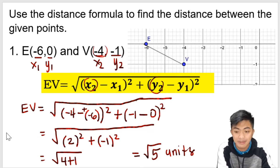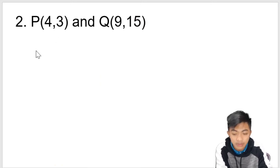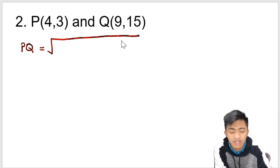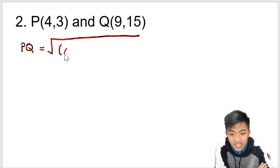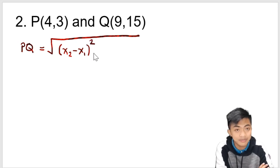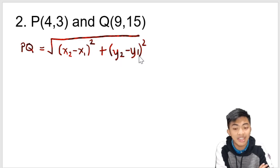Let's have one more example with point P and point Q. The distance from point P to point Q equals the square root of — so you don't forget the formula: take the two x-values, compute (x₂ − x₁)², plus the two y-values, compute (y₂ − y₁)², all under the square root.